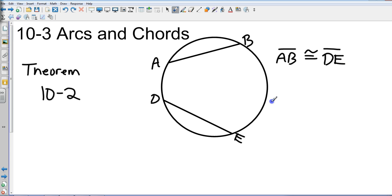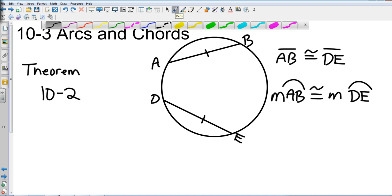And this theorem states that if AB is congruent to DE, then the measure of arc AB has to be congruent to the measure of arc DE. Which makes sense. If this segment is the same as this one, then obviously their arc measures are going to be exactly the same.